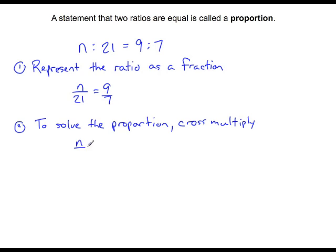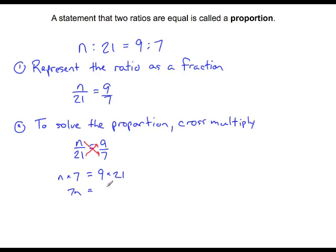So if we have our proportion n over 21 is equal to 9 over 7, when we cross multiply, we're going to multiply n times 7 and 21 times 9. We can rewrite this as: n times 7 is equal to 9 times 21. So we have 7n equals 189. Solving for n using algebra, we divide both sides by 7, which gives us n equals 27.